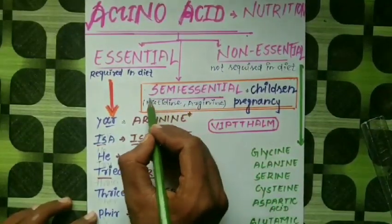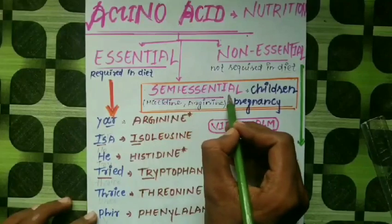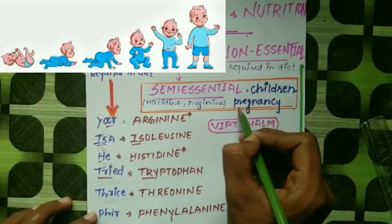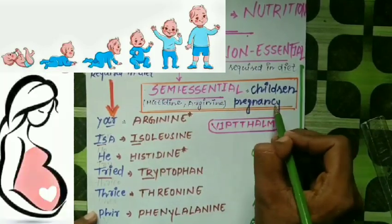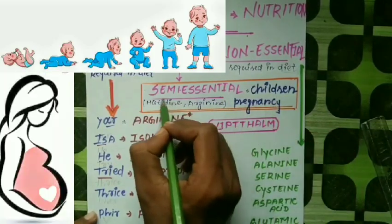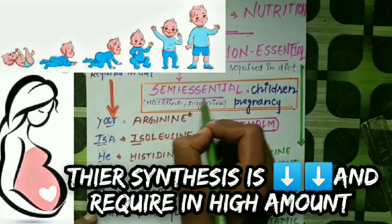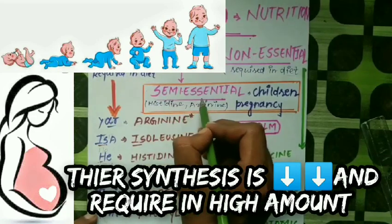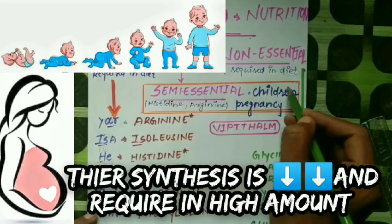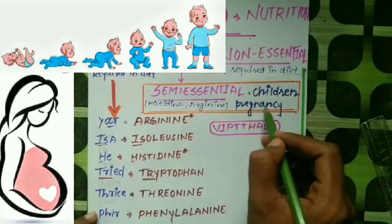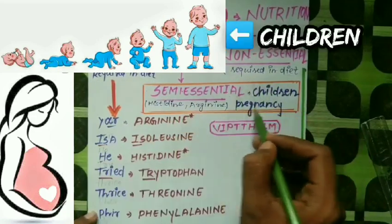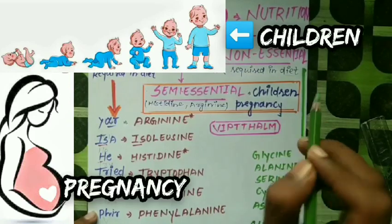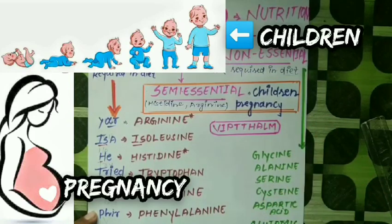And semi-essential amino acid is required in children and pregnancy. What happens is that their synthesis is reduced during growth, so they are generally required in children, pregnancy, and also during lactation.